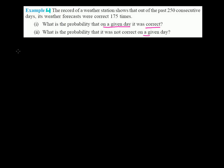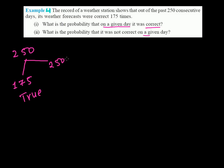We did an experiment with the weather forecast for 250 days. Out of 250 days, the result was that 175 times they were correct, and the rest — that is 250 minus 175 — gives us 75. So 75 times they were incorrect.